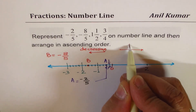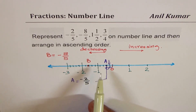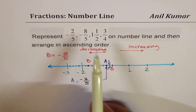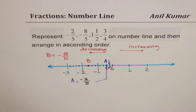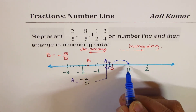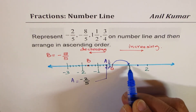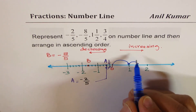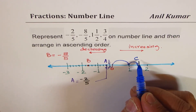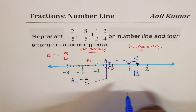Numbers on the right are increasing — remember that. Now the difficult ones have been taken care of. We will place 1 whole — that means one full jump — and then half of it, so half will be somewhere in the center. Let me call this point C, and point C is 1 and 1/2.